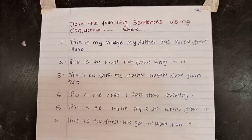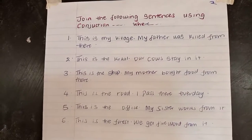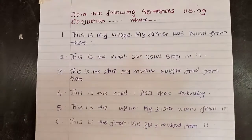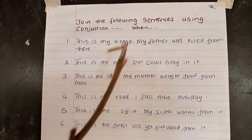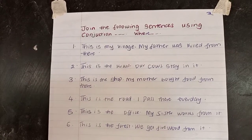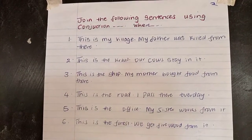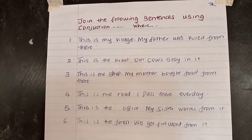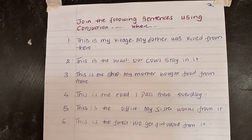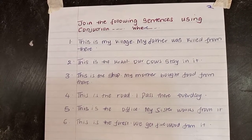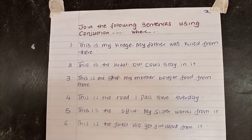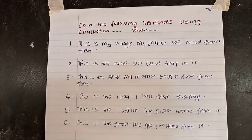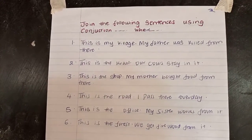Let's do the exercise. Our today's exercise is: join the following sentences using conjunction "where." Number one: This is my village. My father was killed from there. Number two: This is the kraal. Our cows stay in it. Number three: This is the shop. My mother bought food from there. Number four: This is the road. I pass there every day. Number five: This is the office. My sister works from it. And lastly: This is the forest. We get firewood from it.